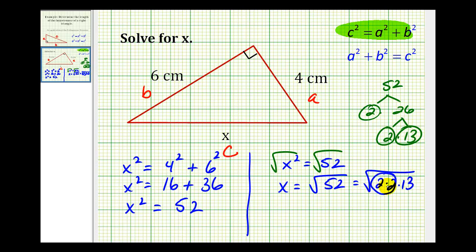Well, two times two represents a perfect square factor. Two times two is four, and the square root of four is equal to two. So X equals two square root of 13 centimeters.